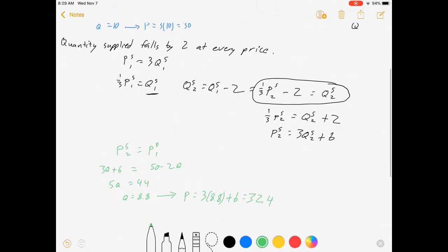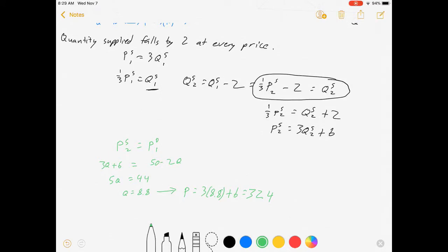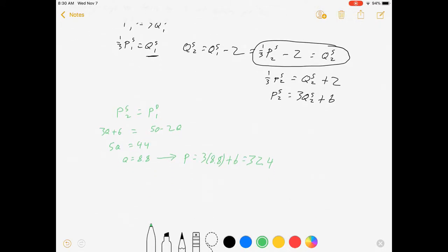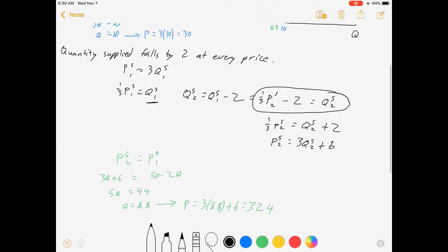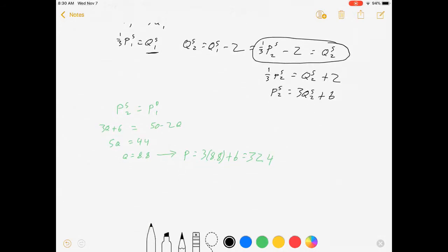I did the supply shift where we made supply fall by 2 at every price. Let's do our demand shift from a different angle. Let's change our willingness to pay at every quantity. Let's say that willingness to pay increases by $11 at every quantity.